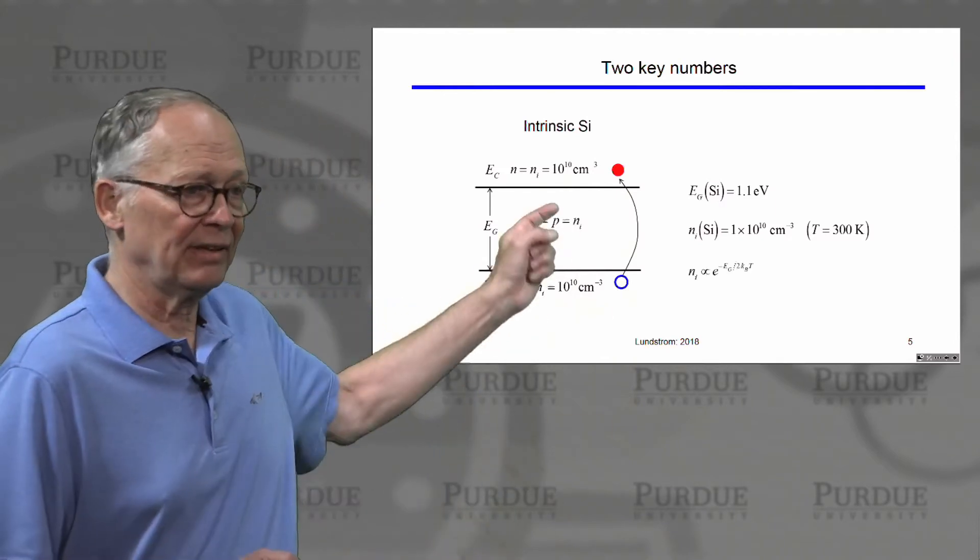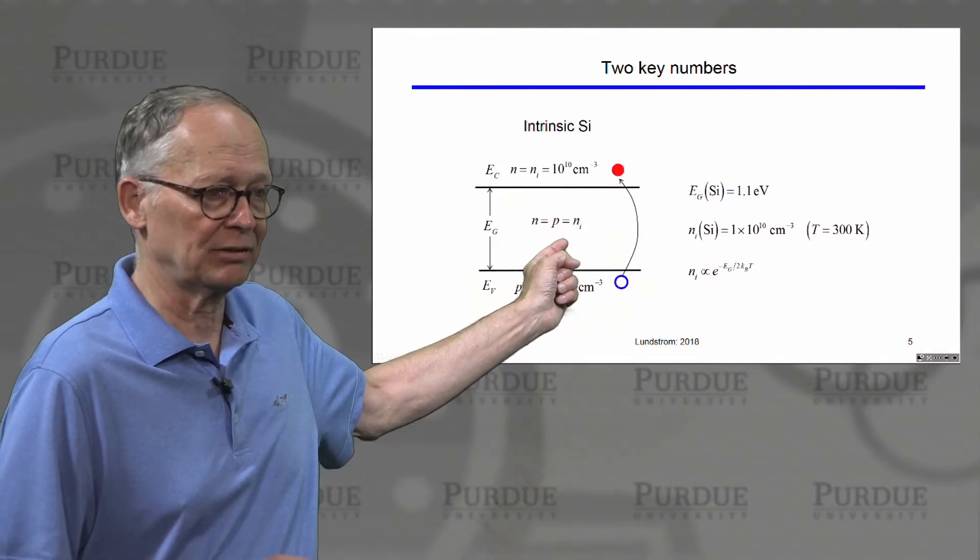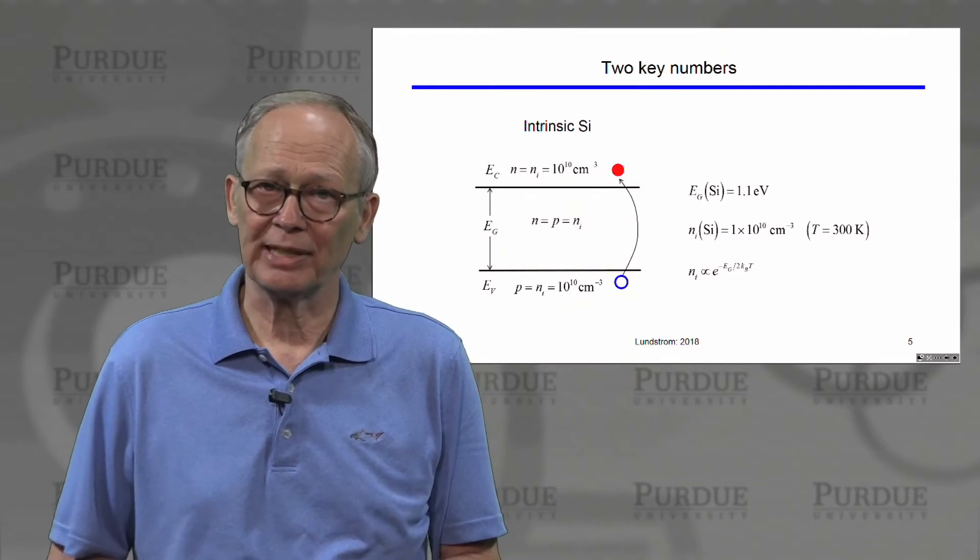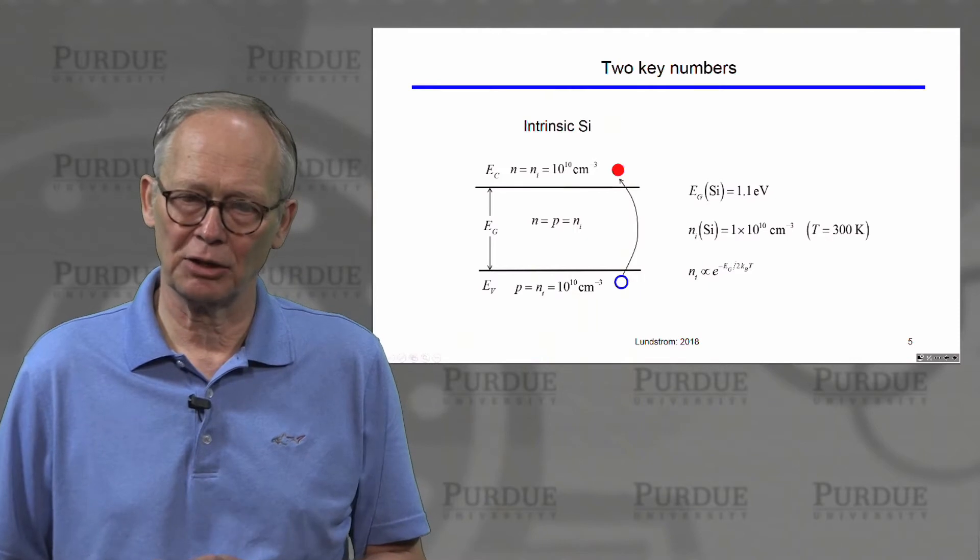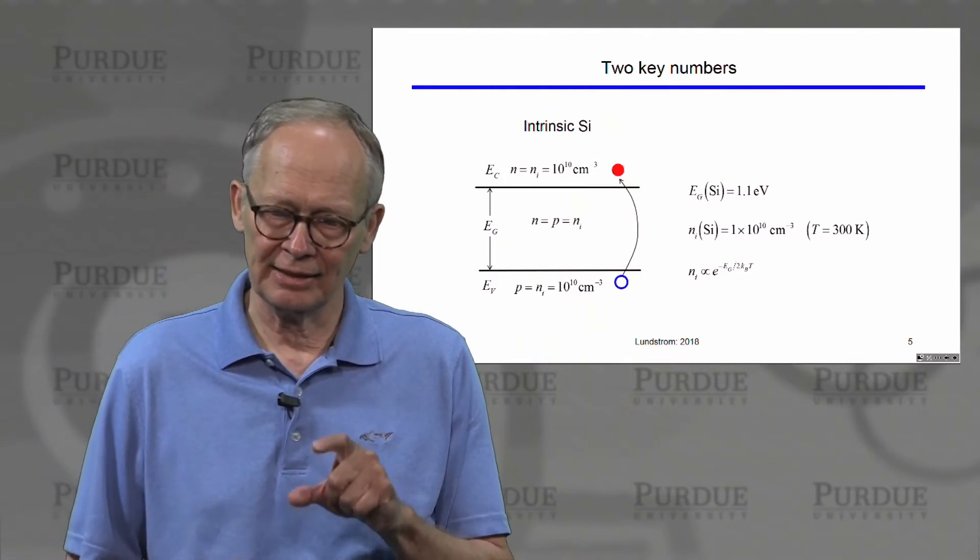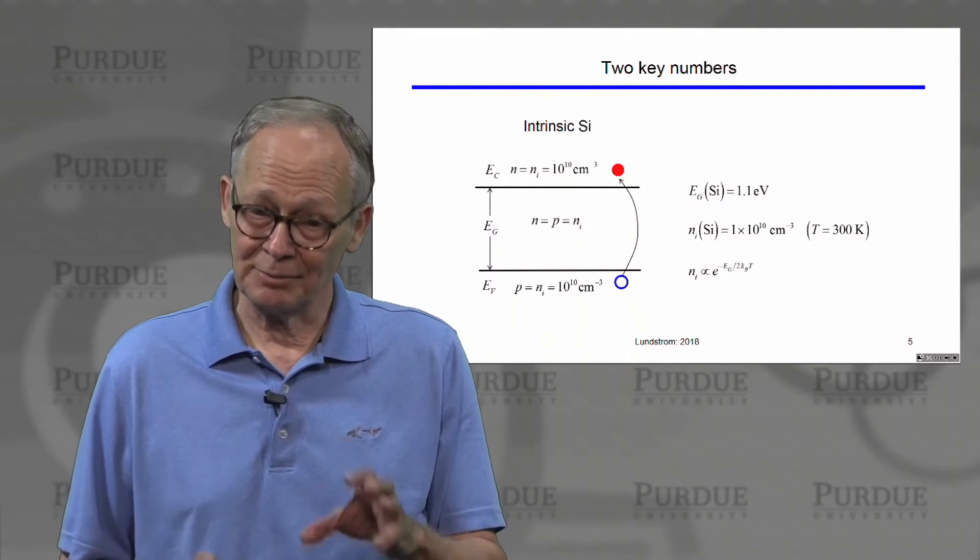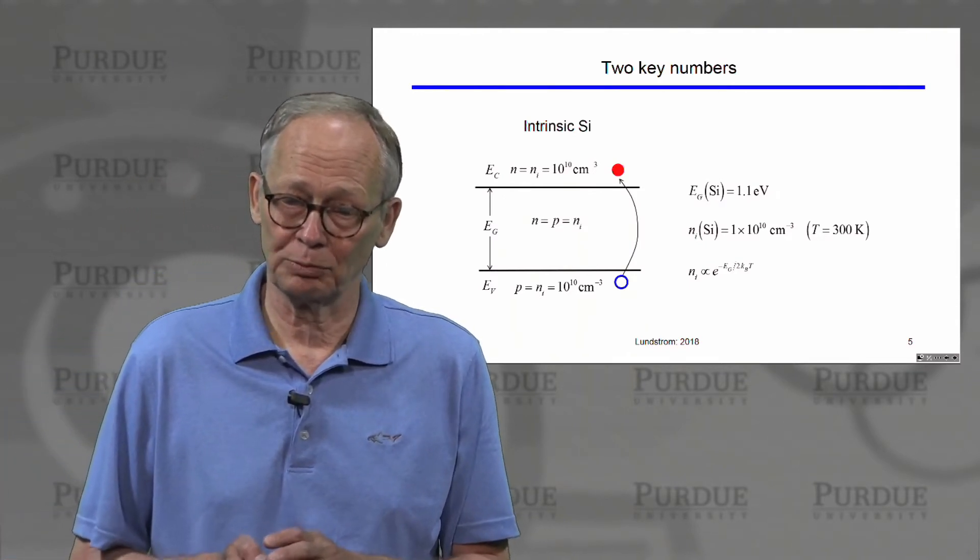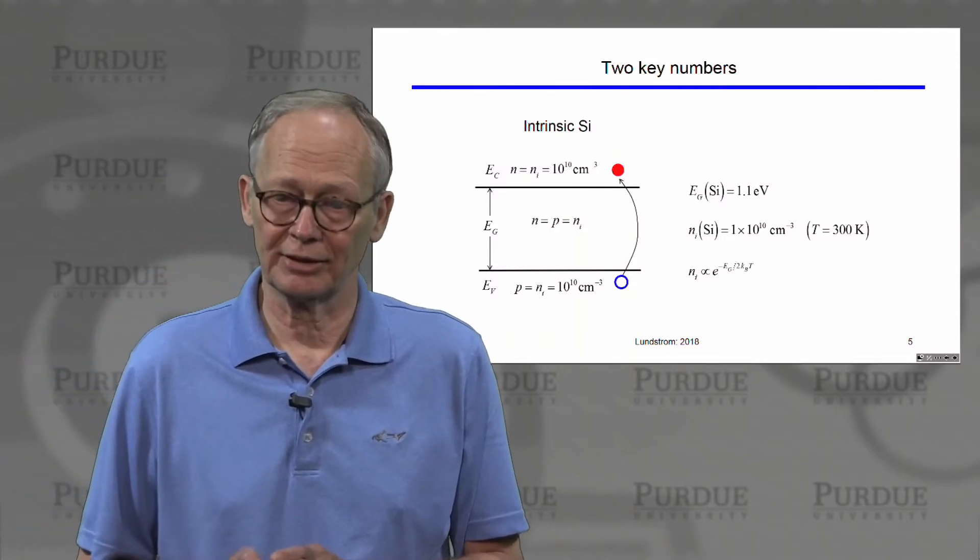Remember that there is a very tight relation between band gap and intrinsic carrier concentration. The intrinsic carrier concentration depends exponentially on the band gap. As the band gap gets wider, it gets exponentially harder to break those bonds and the intrinsic carrier concentration gets exponentially smaller. As the band gap gets smaller, it gets easier to create these electron hole pairs and the semiconductor has a larger and larger intrinsic carrier concentration.